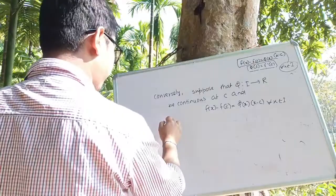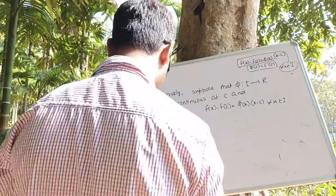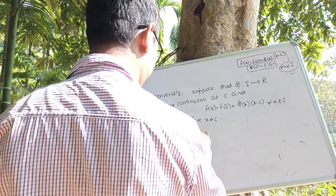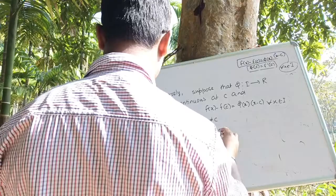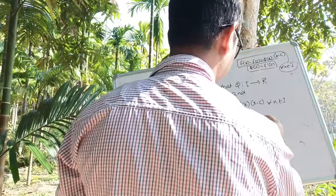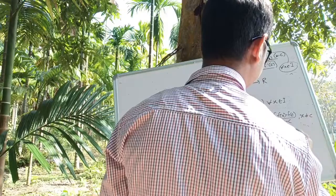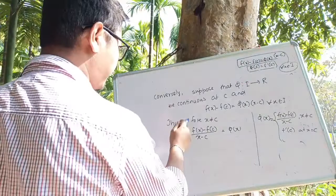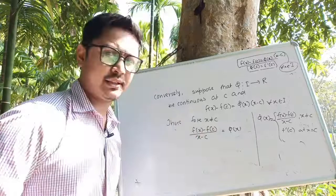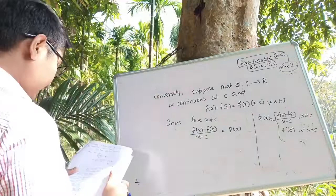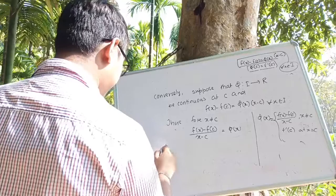We need to show f is differentiable. For x not equal to c: f(x) minus f(c) divided by (x minus c) equals phi(x). According to the definition of the function phi(x), for x not equal to c, f(x) minus f(c) divided by (x minus c) equals phi(x). So the limit as x tends to c of [f(x) minus f(c)] divided by (x minus c) equals the limit as x tends to c of phi(x).